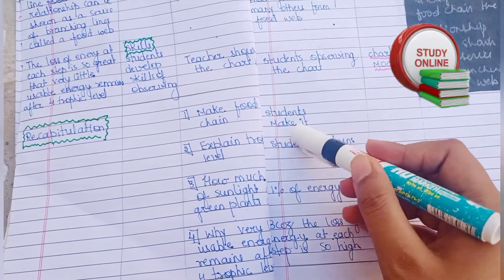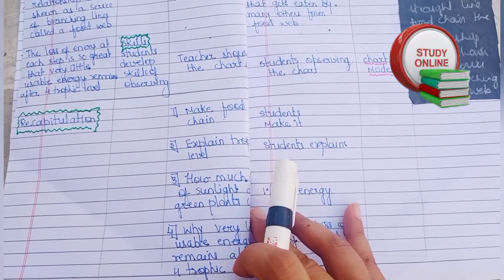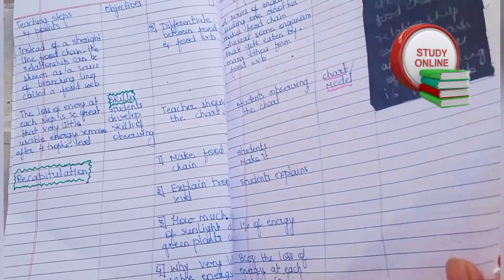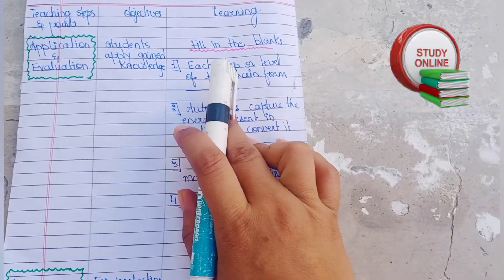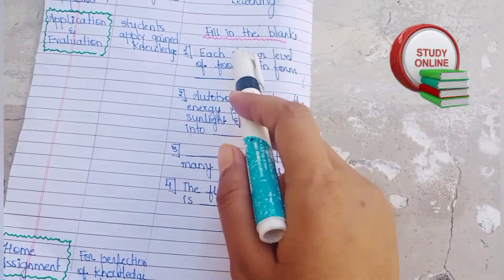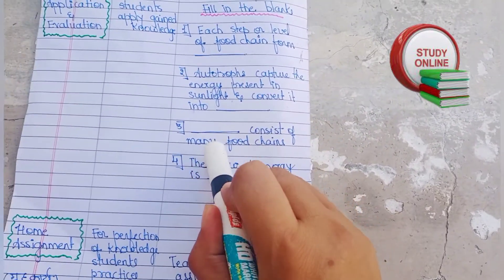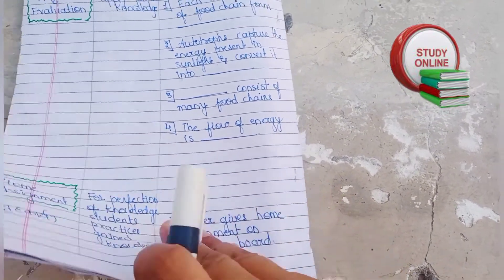Here are the questions and expected answers. Now this is the application and evaluation section. You can see fill in the blanks. I have mentioned this is the home assignment. So this was my lesson plan on the topic food chain and food web.